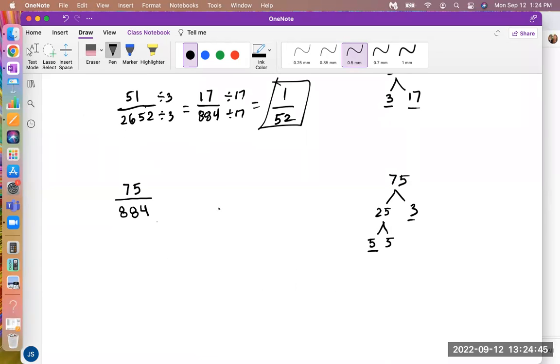Okay, so then the next thing is I have to make sure that it's not divisible by 3. So I can either put that in my calculator, 884 divided by 3. Okay, I don't get an equal number, I get a decimal answer, so that means it doesn't go in equally. So 5 does not go into 884, and 3 does not go into 884. Therefore, this is reduced completely.